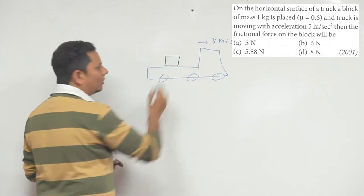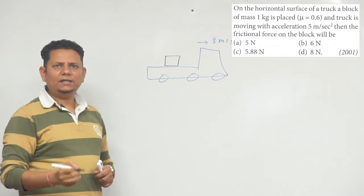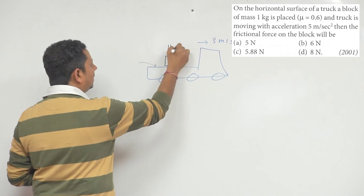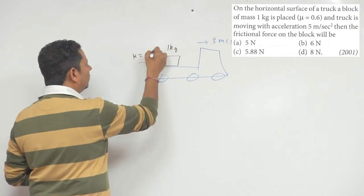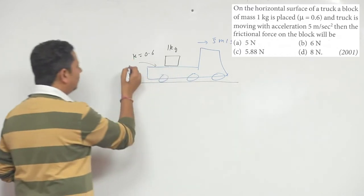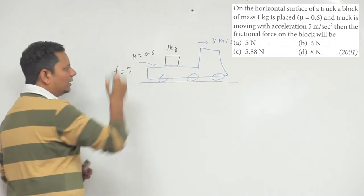And on top of this truck we have placed a block, and this block's mass is 1 kg, and the coefficient of friction here is 0.6. So this is 1 kg, and μ equals 0.6. This is our given data. Now the question is, what will be the friction force between these two?